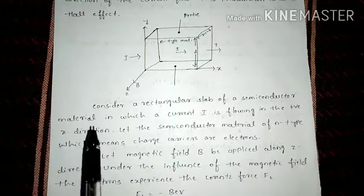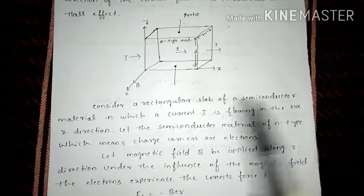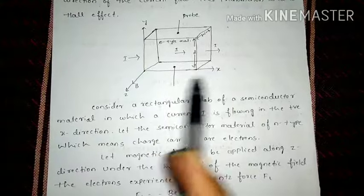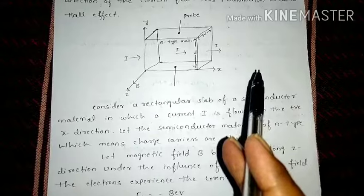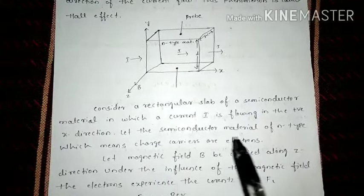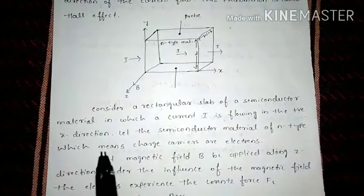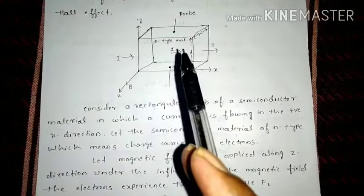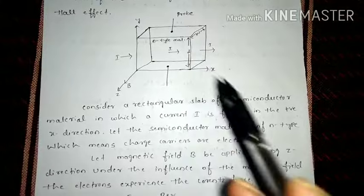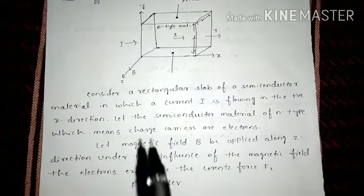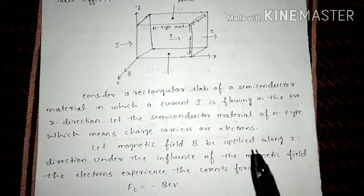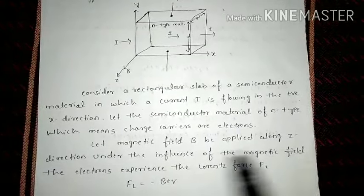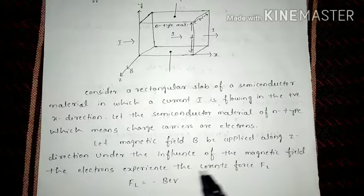Consider a rectangular slab of semiconductor material in which current I is flowing in the positive X direction. The semiconductor material is N-type, which means the majority charge carriers are electrons. Let the magnetic field be applied along the Z direction.